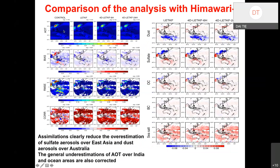Comparing the analysis with Himawari-8 results: in the control experiment, AOT over East Asia is significantly overestimated. After assimilating Himawari-8 observations, the model results are quite close to the observations, indicating that the Himawari-8 AOT is successfully assimilated. The mean squared error (MSE) is also significantly reduced after assimilation.